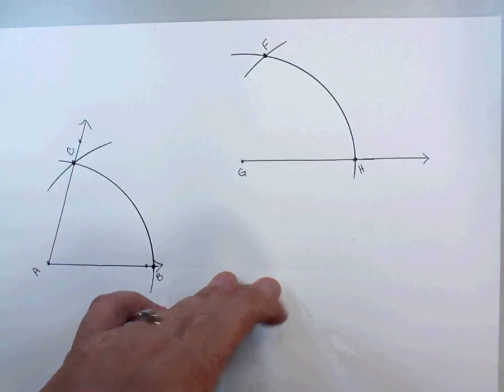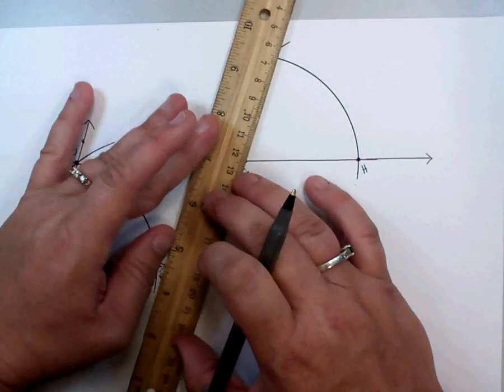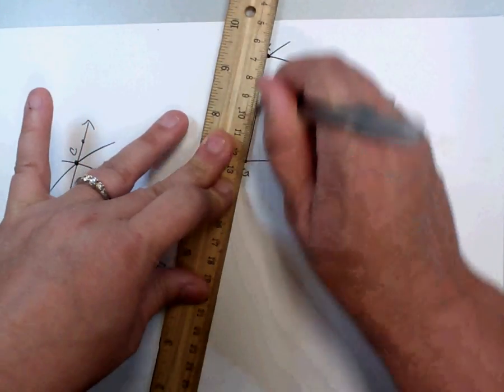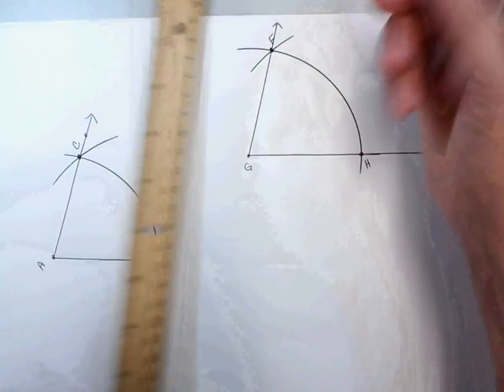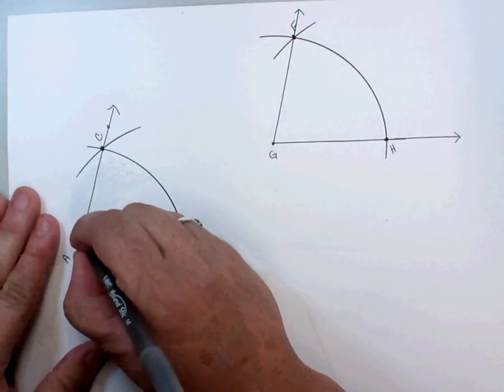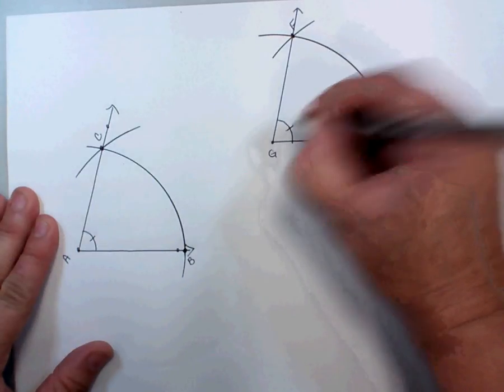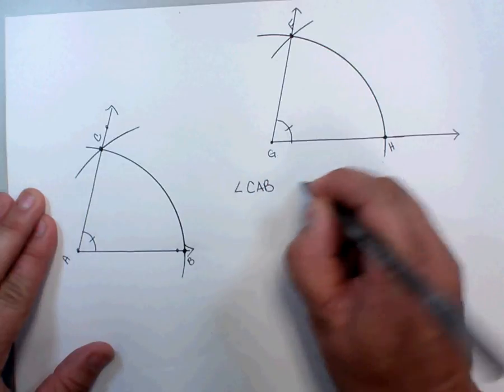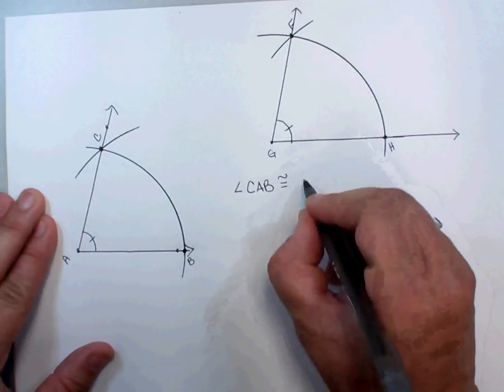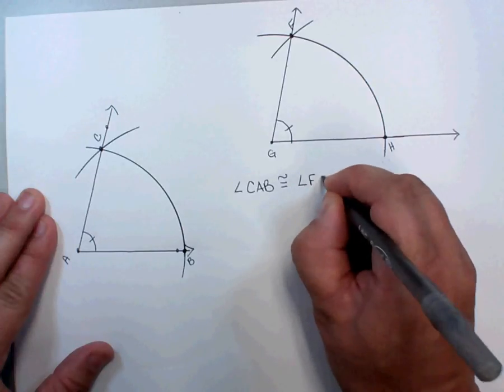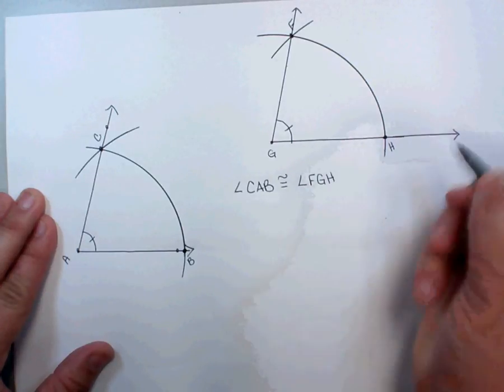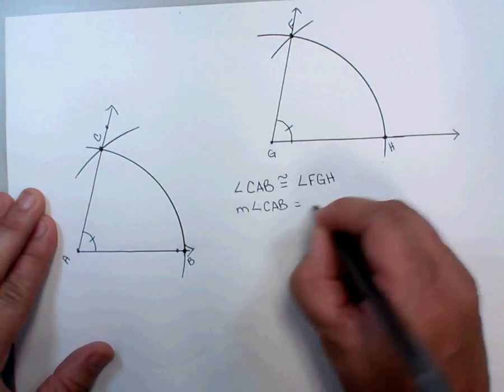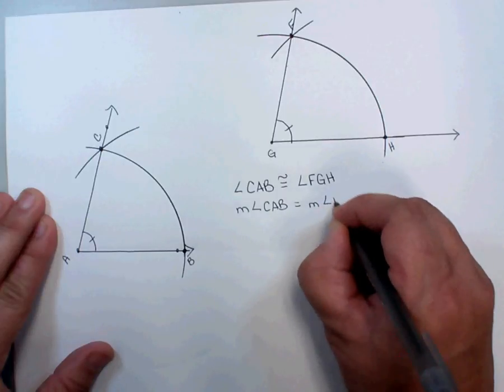We're just going to take our straight edge and we're going to connect G and F as a ray because it's an angle. And we have just made congruent angles. So we know that angle CAB is congruent to angle FGH. Or we could also say that the measure of angle CAB is equal to the measure of angle FGH.